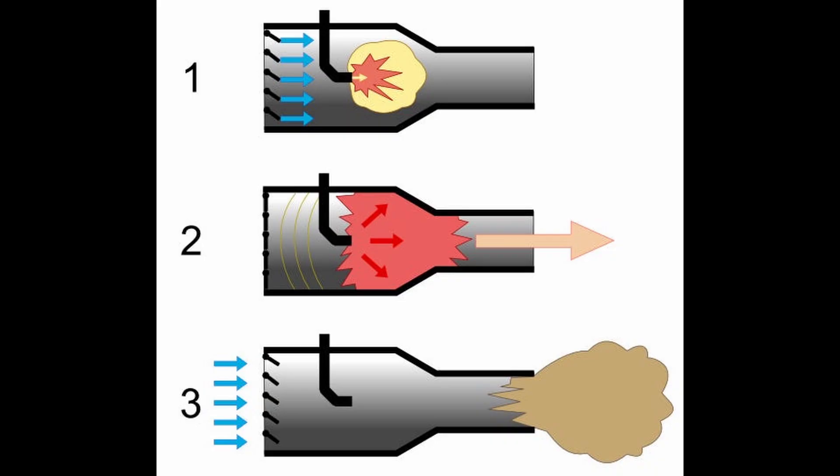Valved pulse jets have valves that prevent the air and gas mixture from backflowing. However, this adds more parts to the engine. For valveless pulse jets, this is where the Tesla valve is used. Since the Tesla valve has no moving parts and works best with fast liquids, the Tesla valve complements the engine well.